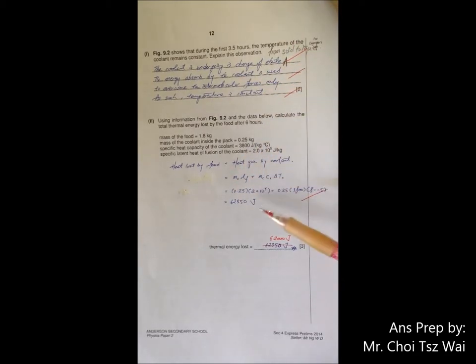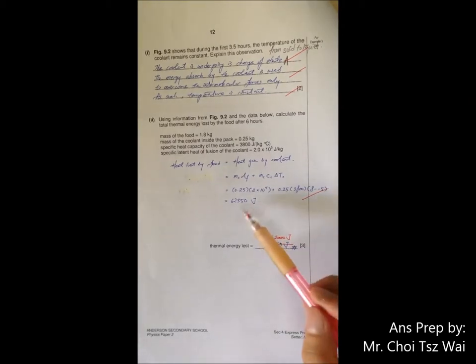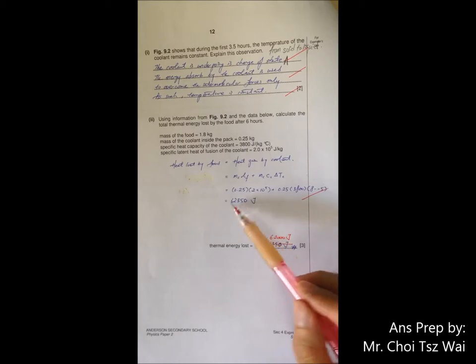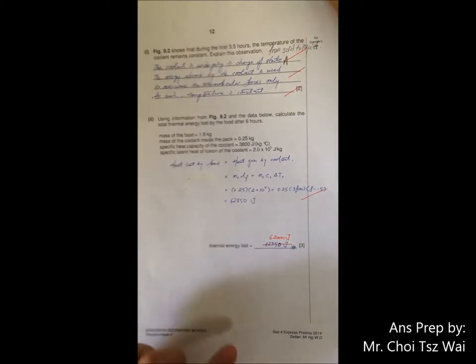Once you plug in all the value, press the calculator, you'll get this value. And like I said, be very careful with the significant figure. Down here you have 5SF and ridiculous. So please reduce it to either 2SF or 3SF and you'll be fine.